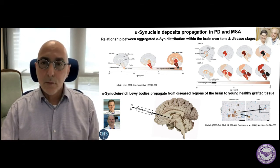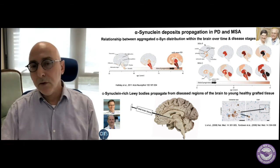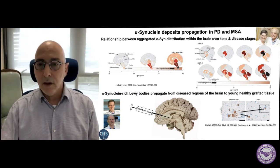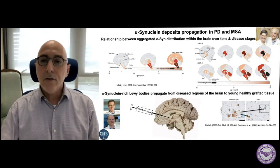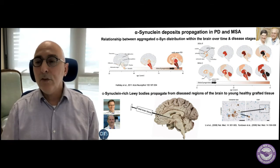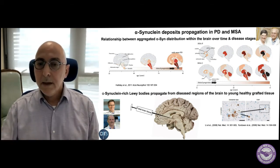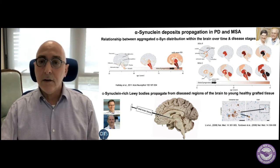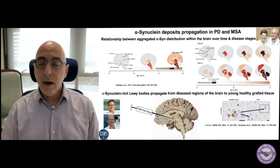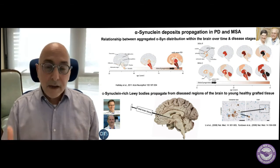With time, these regions are more and more affected by pathology, and what we observe is a spread of pathology from these regions to other regions within the brain. In multiple system atrophy, we have two forms of the disease: MSAP, for MSA with Parkinsonian-like phenotype, and MSAC, which is a form that affects the cerebellum. In MSAP, the first regions affected are the putamen and the substantia nigra, and then the pathology spreads. In MSAC, the first regions affected are the caudate and the cerebellum, which are progressively more affected over time.